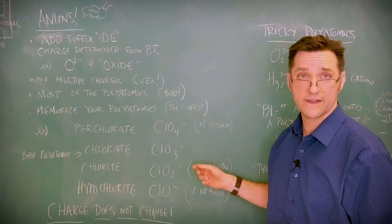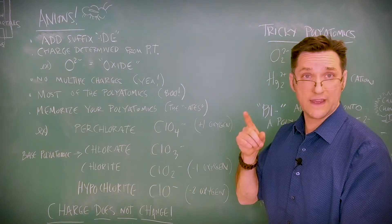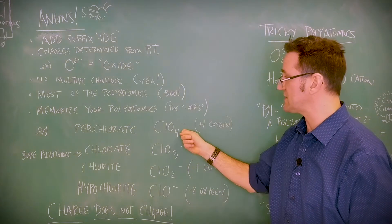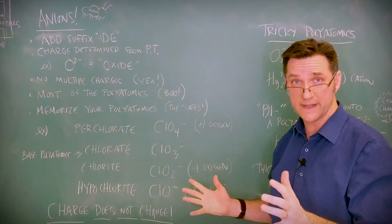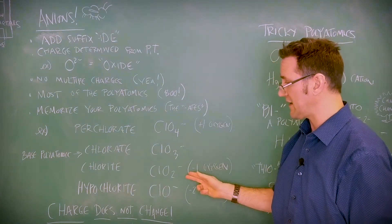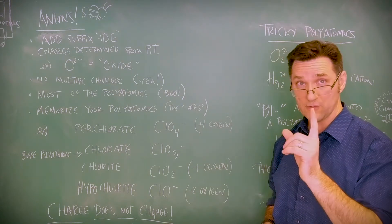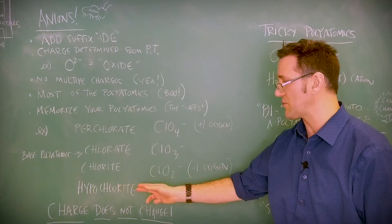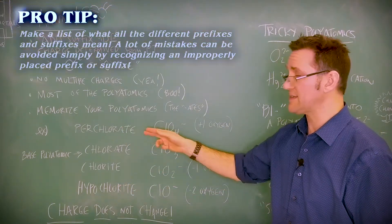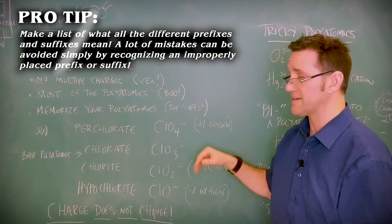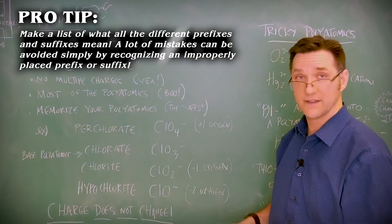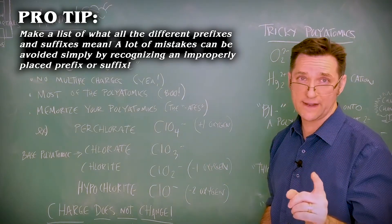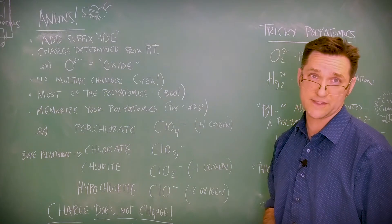So your base charge is -ate. For instance, chlorate, ClO3 minus. Now, you can scale the number of oxygens. If I add another oxygen onto it, I get per-ate. That just changes the number of oxygens by one up. Charge doesn't change. Taking oxygen away, it's chlorite, minus one oxygen. And you can take two oxygens away sometimes, and then you can get hypochlorite. Don't forget that charge doesn't change when you change the number of oxygens.